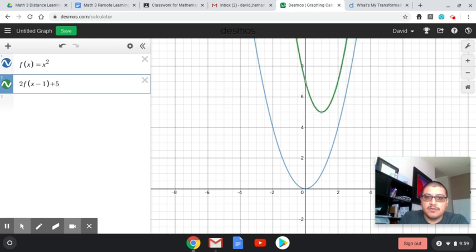And again, putting a number in front will have the same effect. If it's a number greater than 1, it will make it narrow. If it's a number less than 1, like 0.5, it will make it wider.